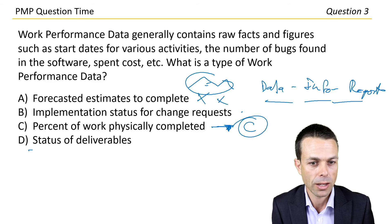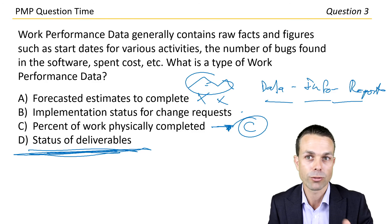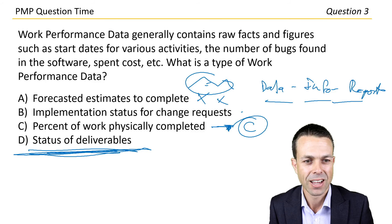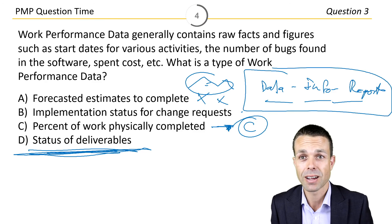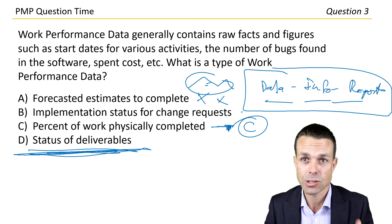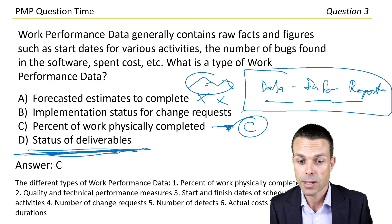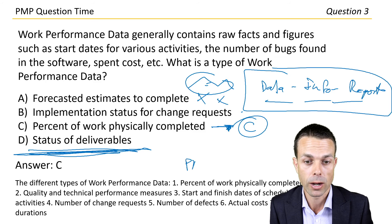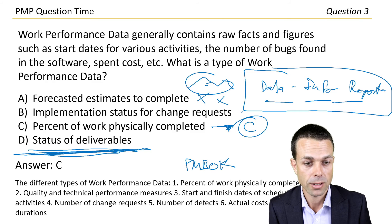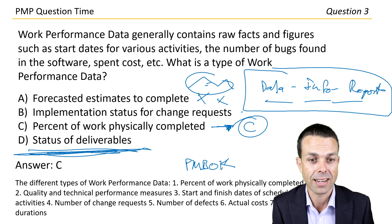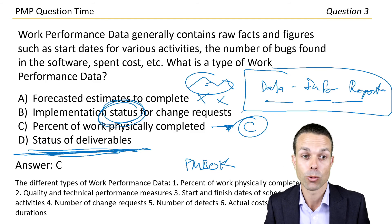Status of deliverables has to be measured against something else to create it, so probably not that. These are really tricky ones. For data, it's just the raw facts — how much have we completed. The PMBOK guide confirms: types of work performance data include percent of work physically completed, quality and technical performance measures, start and finish dates — pure facts — number of change requests (but not implementation status, as status is more about information), number of defects, actual costs, and actual durations. That was a bit tricky.